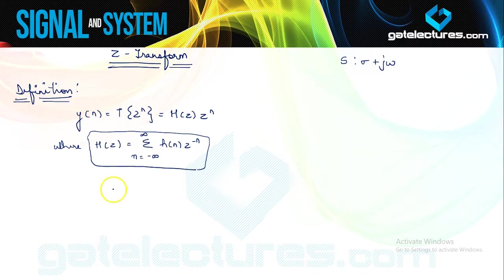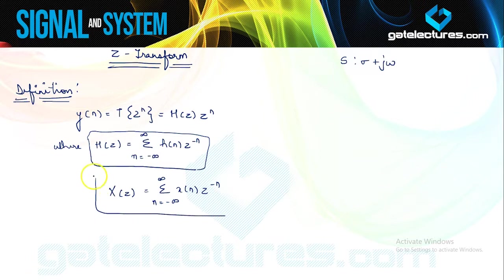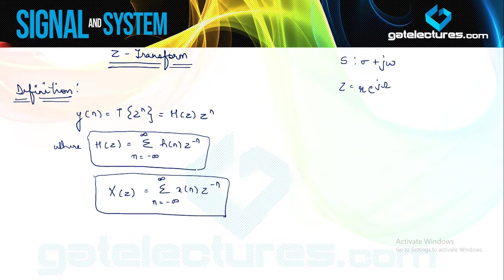For any general signal x(n), X(Z) — the Z-transform of x(n) — is given as the summation from n equals minus infinity to infinity of x(n) times Z^(−n). This variable Z is a complex variable, similar to S. S was defined in rectangular coordinates, whereas Z is defined in polar coordinates: Z equals R*e^(j*sigma), where R is its magnitude and sigma is the phase of Z.